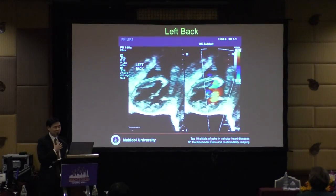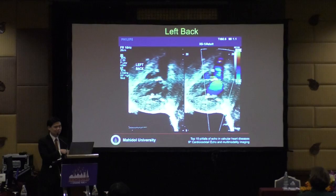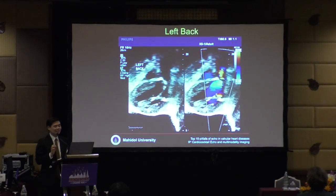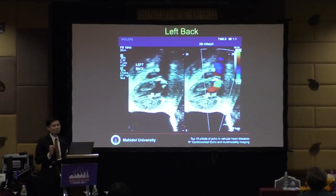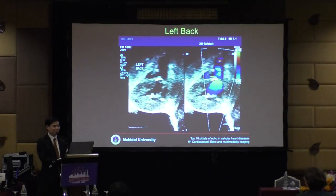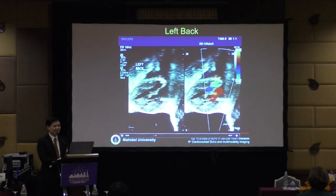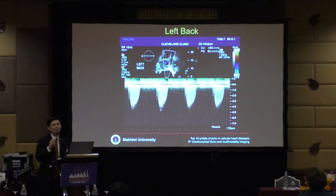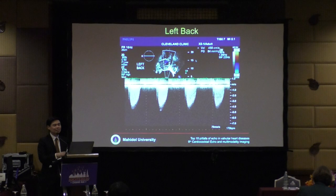Images borrowed from sonographers at the Cleveland Clinic show them trying hard to get images from the left back. That view is only possible when the patient has a large pericardial effusion, but it yielded the highest velocity of 8.4 m/s — demonstrating how hard they try to ensure they don't miss severe aortic stenosis.